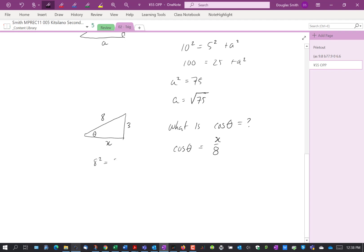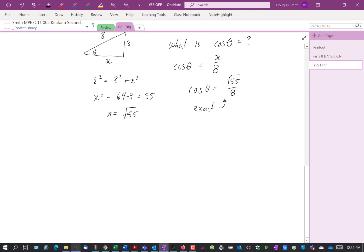So x squared is 64 minus 9, so that's 55. So x is the square root of 55. So cos theta is square root 55 over 8. And if we're looking for the exact answer, we just leave it there. That is what cos theta is, it's square root of 55 over 8.